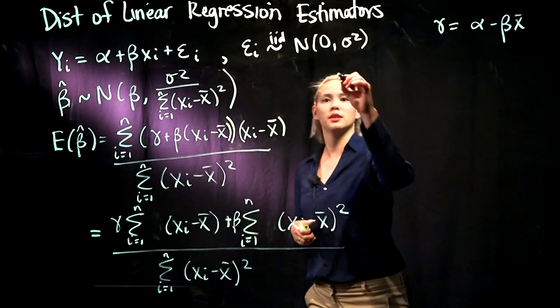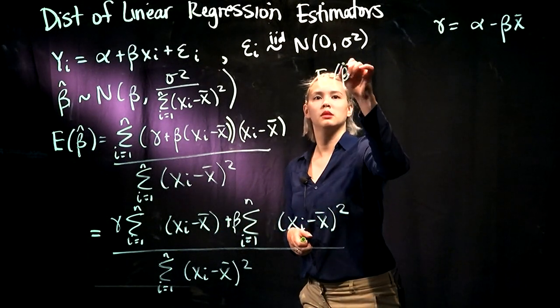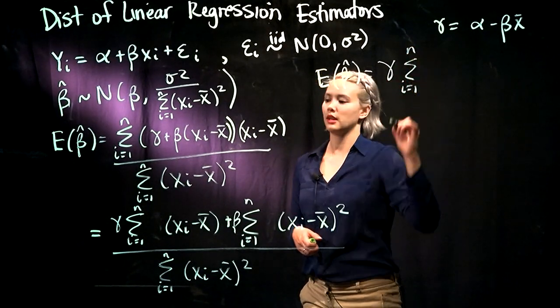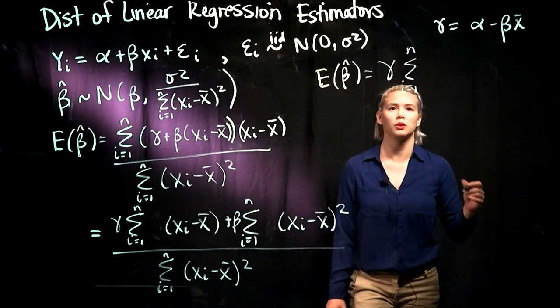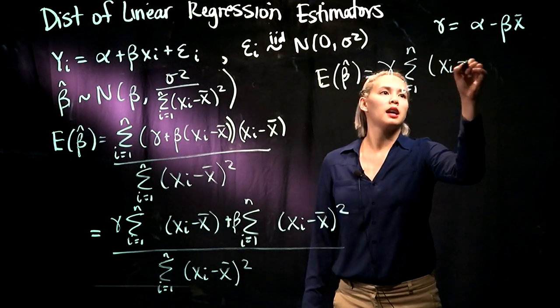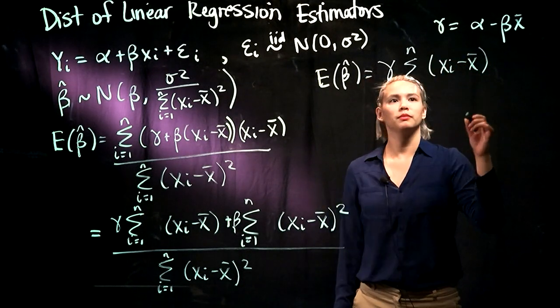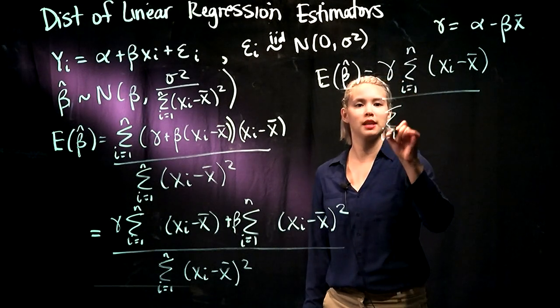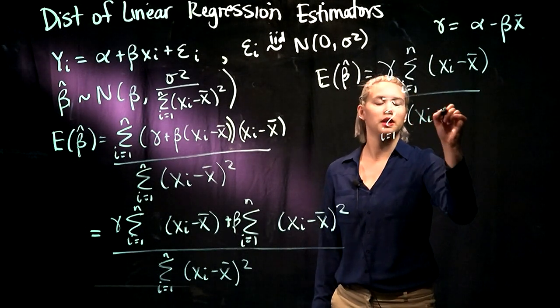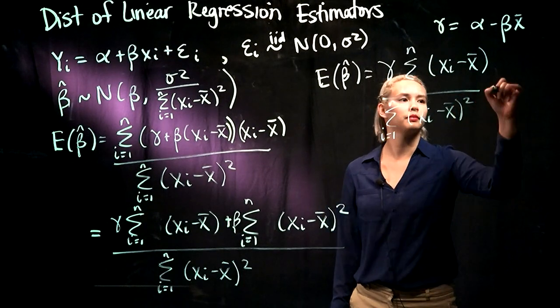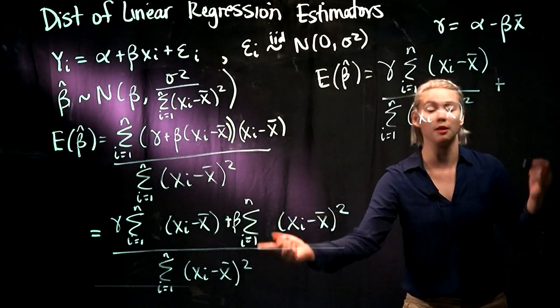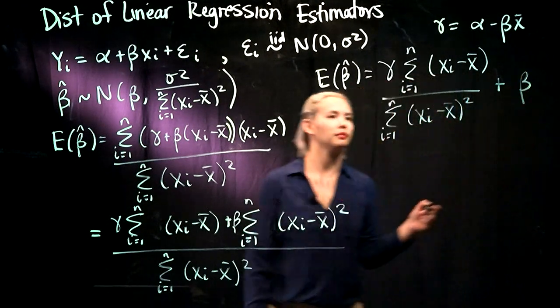So that leaves gamma times the sum from i equals 1 to n, xi minus x bar squared, plus beta times something divided by something, which is just beta. So that's our expectation of beta so far.